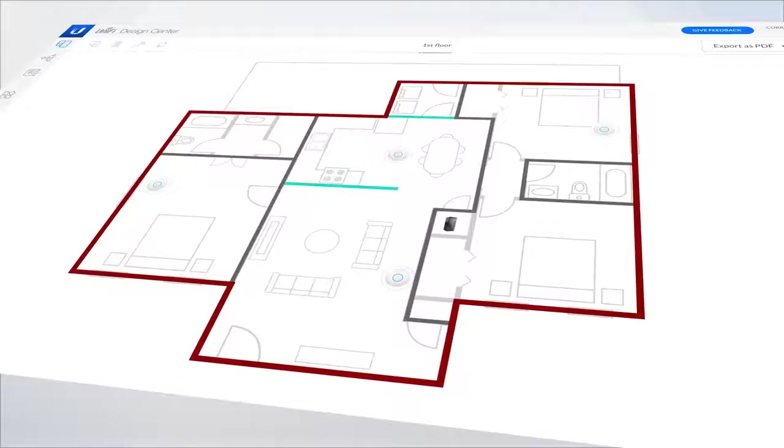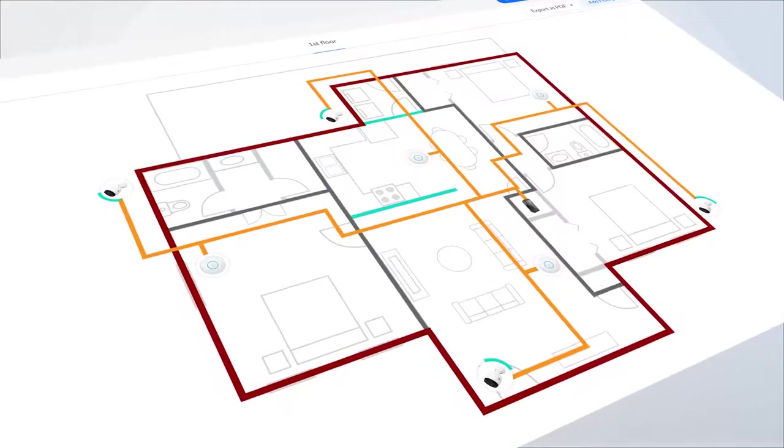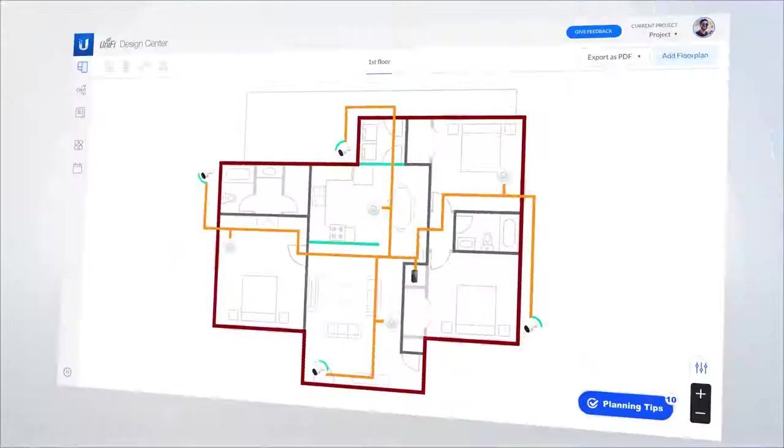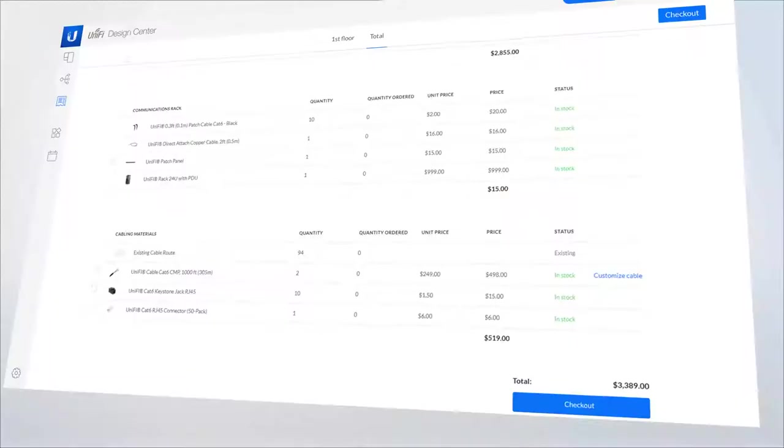From that PoE switch, we're going to run our cables out to the wireless access points. We're also installing cameras in this house, so I'm going to make sure that we pull our cable for the cameras, generally with the same path that we do for the access points. Once I have all the devices laid out, I can click a button and it's going to estimate my cable links that I need for this particular job. I always go through and make a few adjustments on the routing, but that estimate is key because then it helps with my ordering and planning.